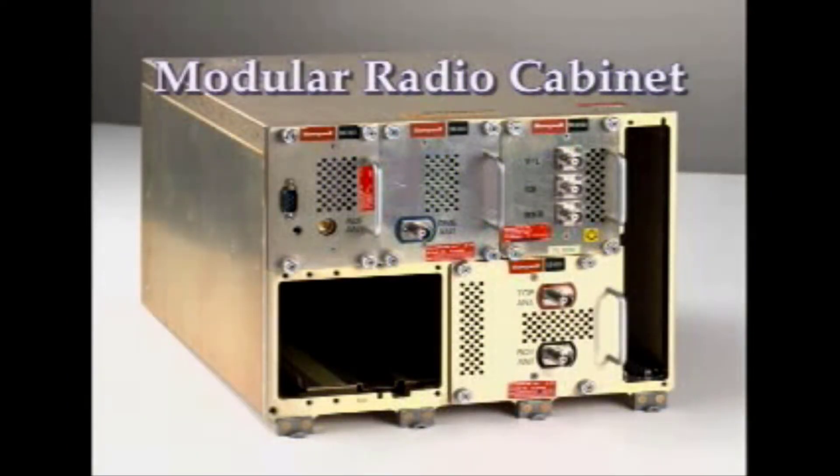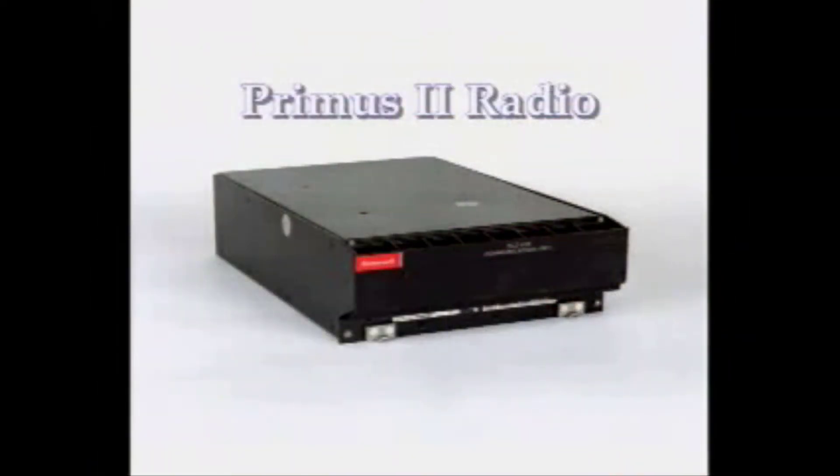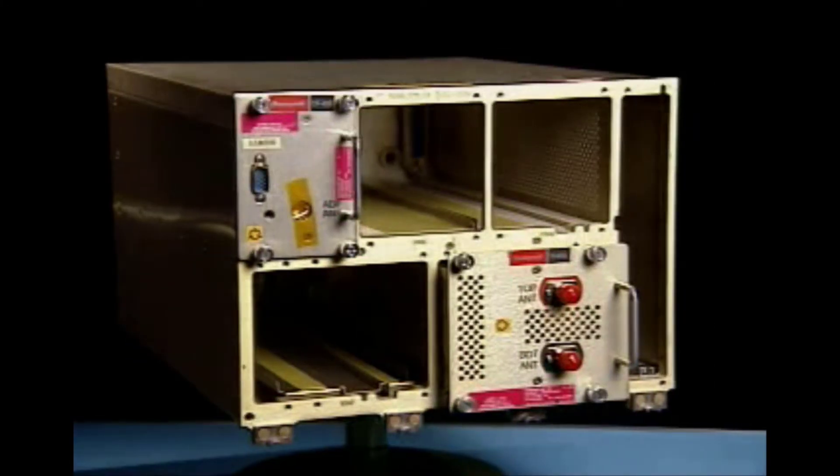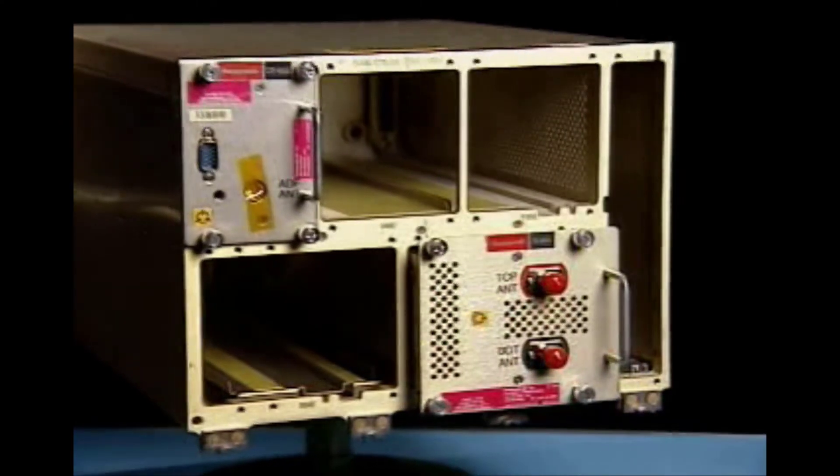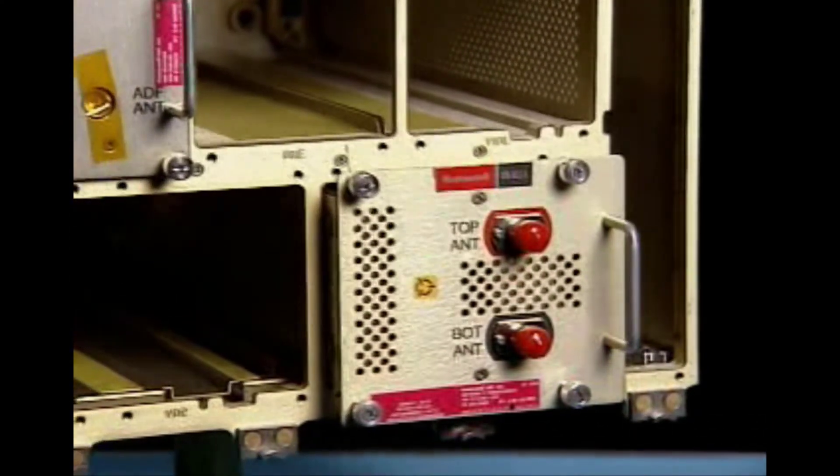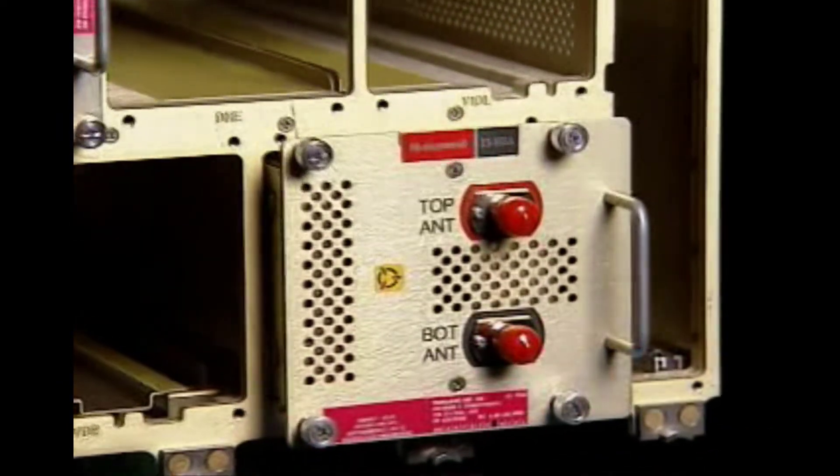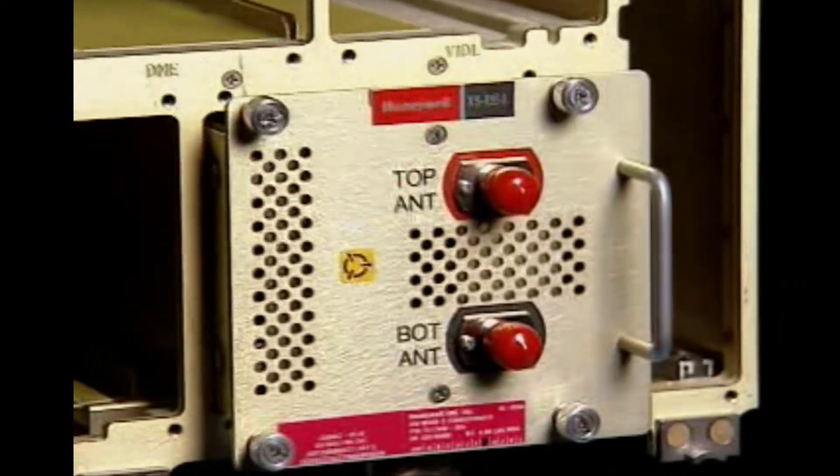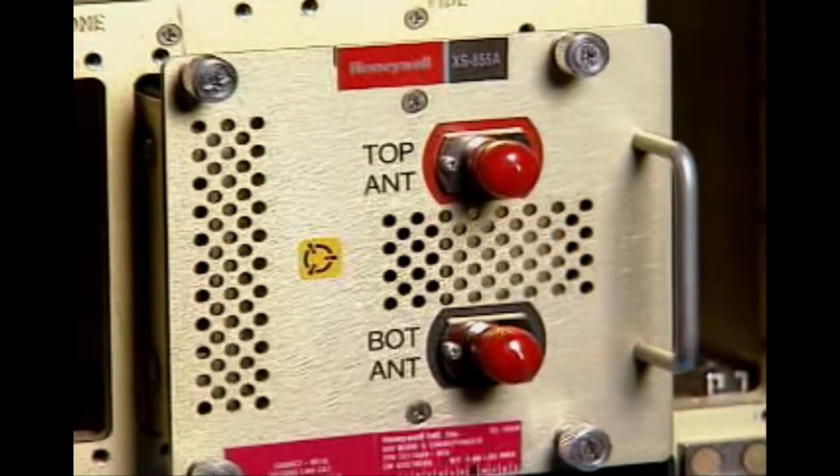The second major component of the Honeywell Primus EPIC system is the Modular Radio Cabinet, the MRC. Instead of the former standalone units, Honeywell Digital Radios are now combined into a single cabinet as line replaceable modules. The MRC utilizes front-mounted D-Sub, BNC, TNC, and Triax connectors and communicates to the rest of the EPIC system through the ASCBD and LAN networks.